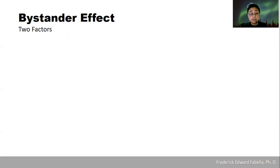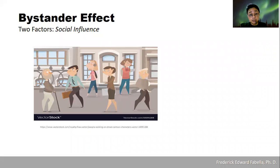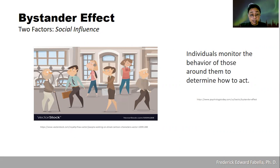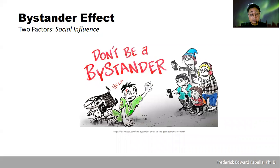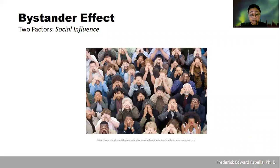Now let's consider the second factor — it's called social influence. What is social influence? Individuals monitor the behavior of those around them to determine how to act; they base their actions on the actions of other people. What will happen if, instead of helping, everybody took pictures or videos of the emergency? It will be likely that you will also do the same because of social influence. Or what will happen if everybody ignored the emergency? It is likely that you too will do the same. That is social influence.